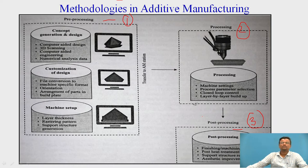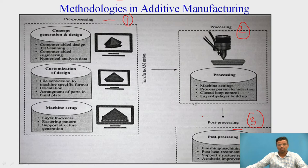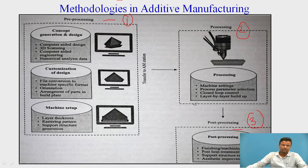Post-processing steps include providing surface finish, applying heat treatment processes such as curing, quenching, or annealing, and removing the support structure using tools like pliers. We also need to improve the aesthetic quality of the product for customer satisfaction. These are the main steps in additive manufacturing.